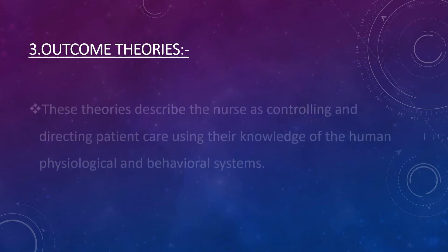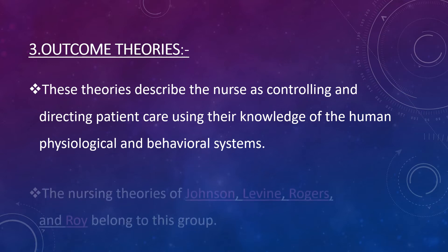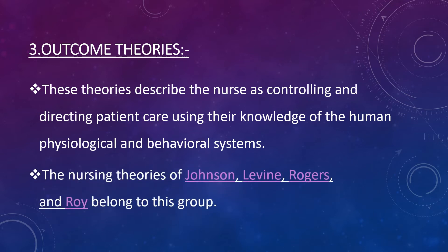Number three is outcome theories. The outcome theories describe the nurse as controlling and directing patient care using their knowledge of the human physiological and behavioral systems. The nursing theories of Johnson, Levin, Rogers and Roy belong to this group.